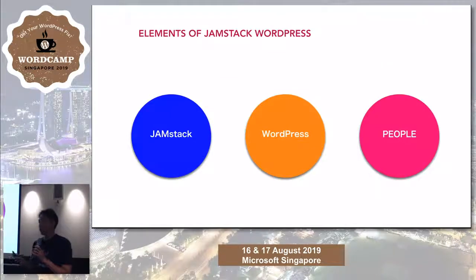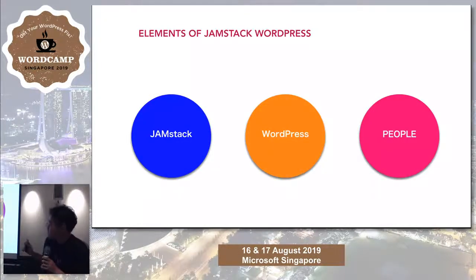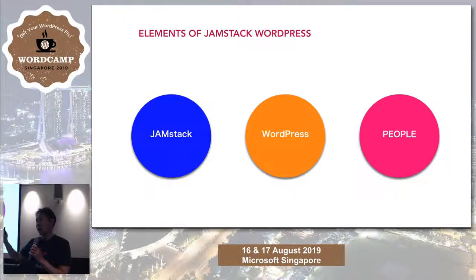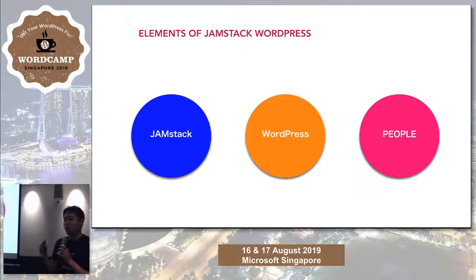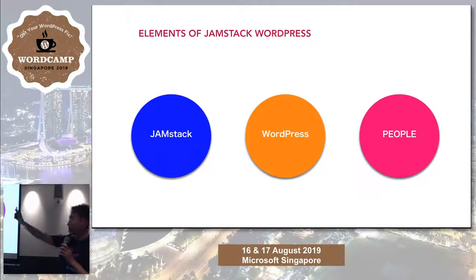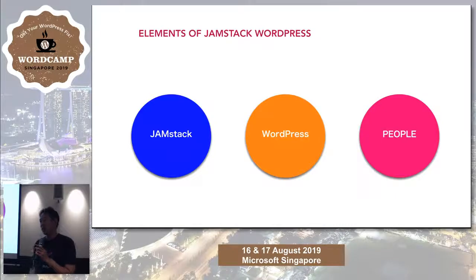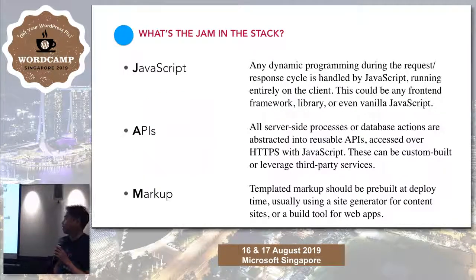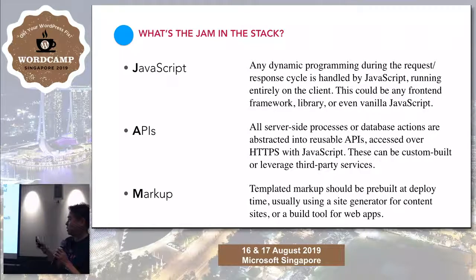In using Jamstack with WordPress there are three elements. On the left side is Jamstack, a new architecture for web developers. On the right side are the people who are publishing articles. And in the middle, the way to connect Jamstack and those people is WordPress. So let's dig a little deeper into these elements.